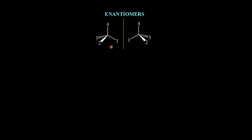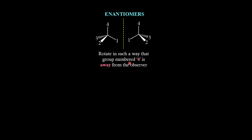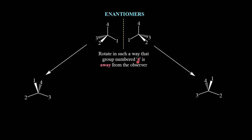Let us do the same exercise with a general molecule on a 2D paper. The general molecule is carbon connected to 4 different groups — 1, 2, 3, 4 — and we take the group number itself as the priority number. One more molecule is its mirror image, called the enantiomer. We have to rotate the molecule so that group number 4 is away from the observer. With 4 away, moving from 1 to 2, then 2 to 3 gives a counterclockwise rotation, so this molecule is S in configuration.